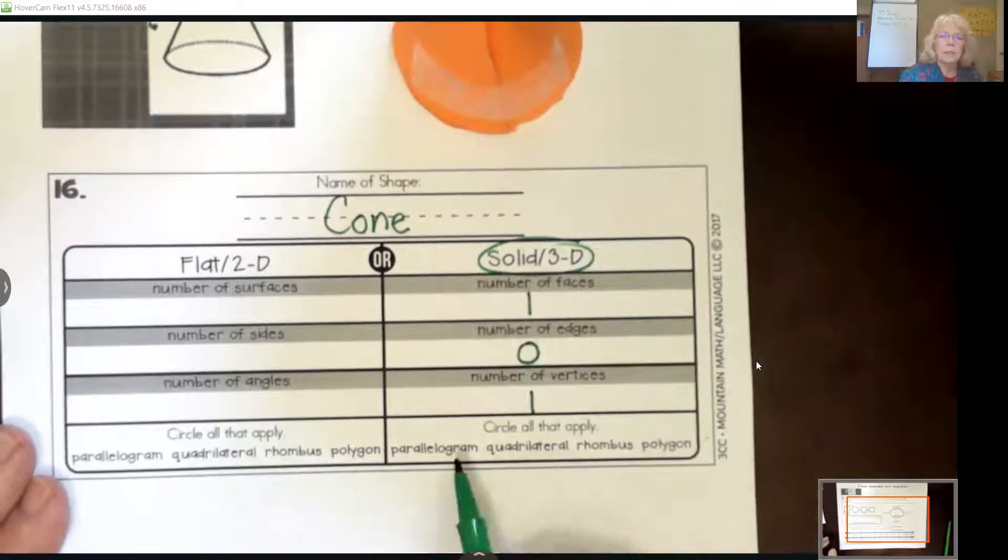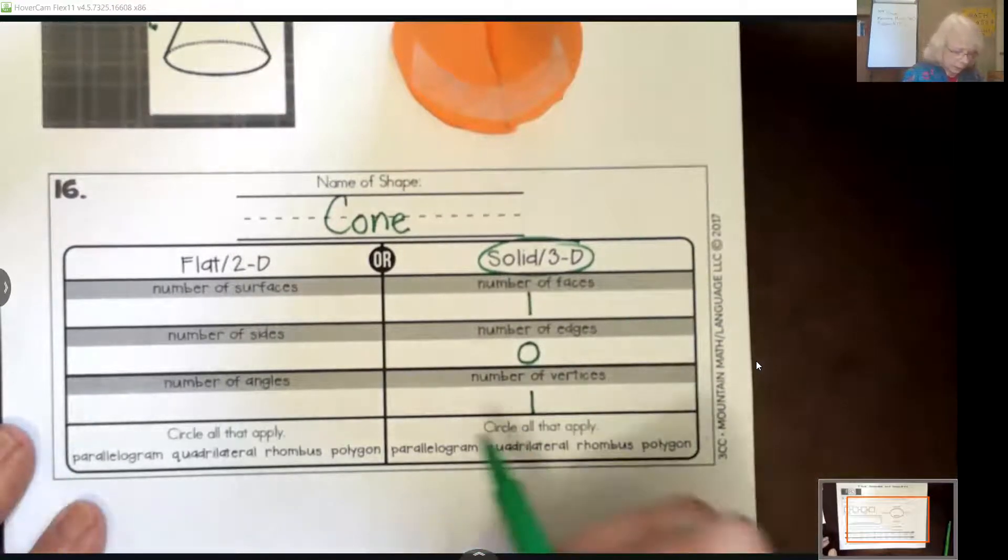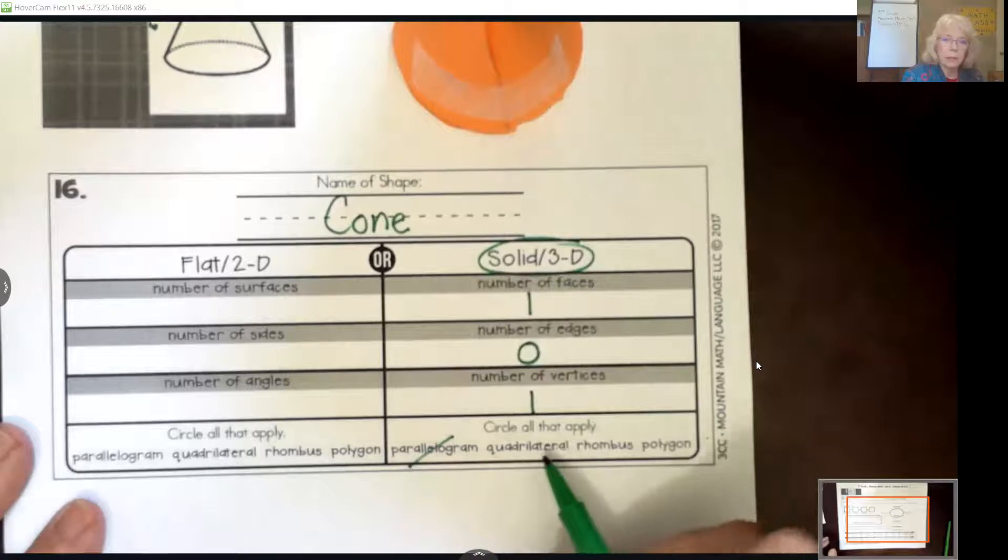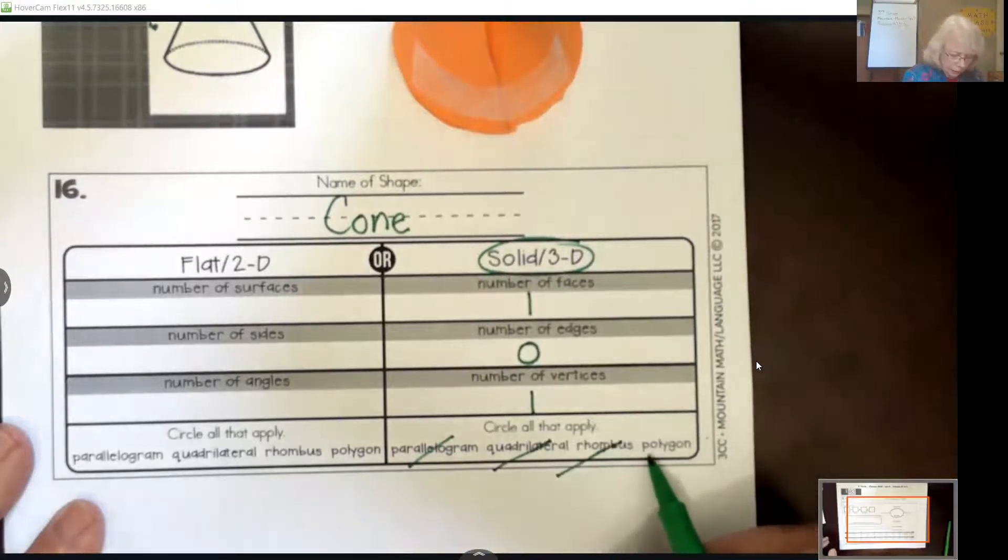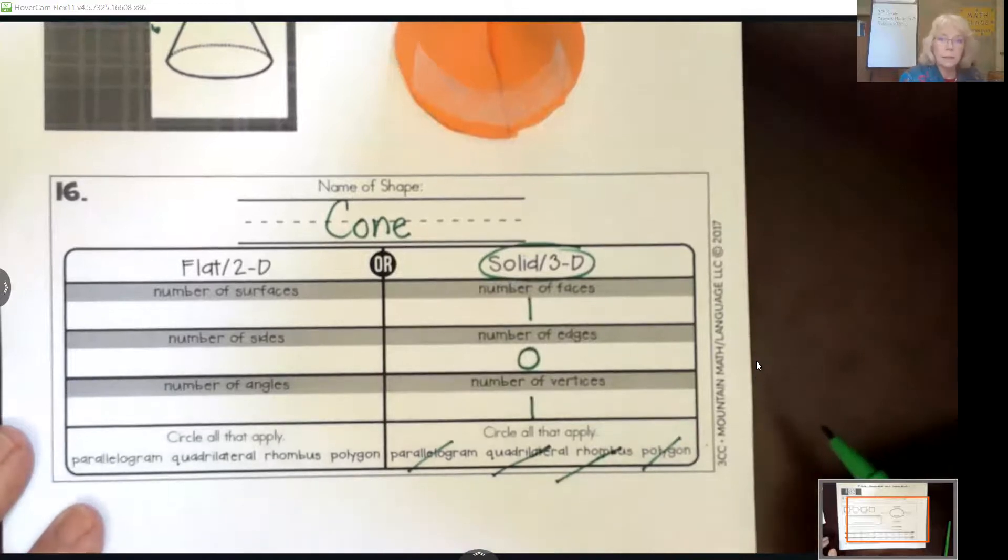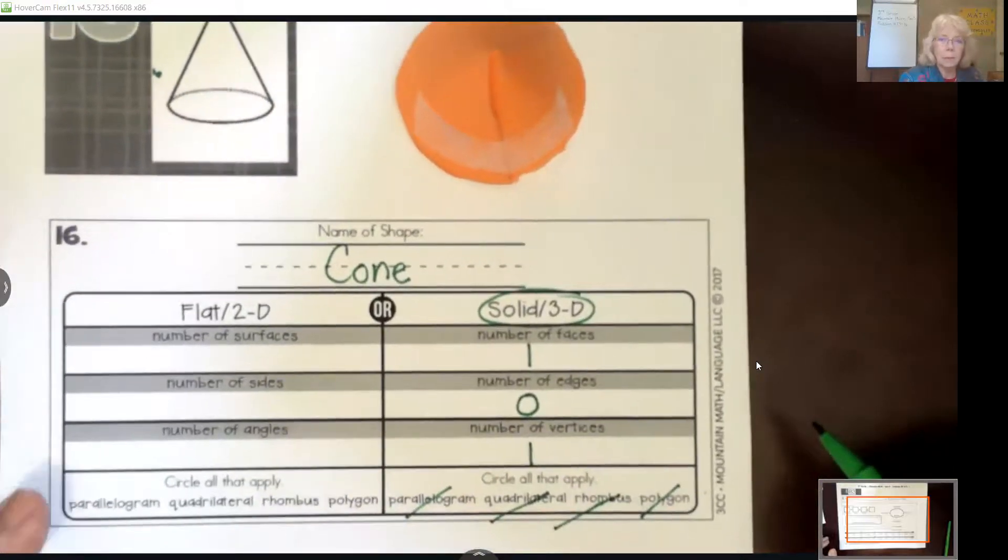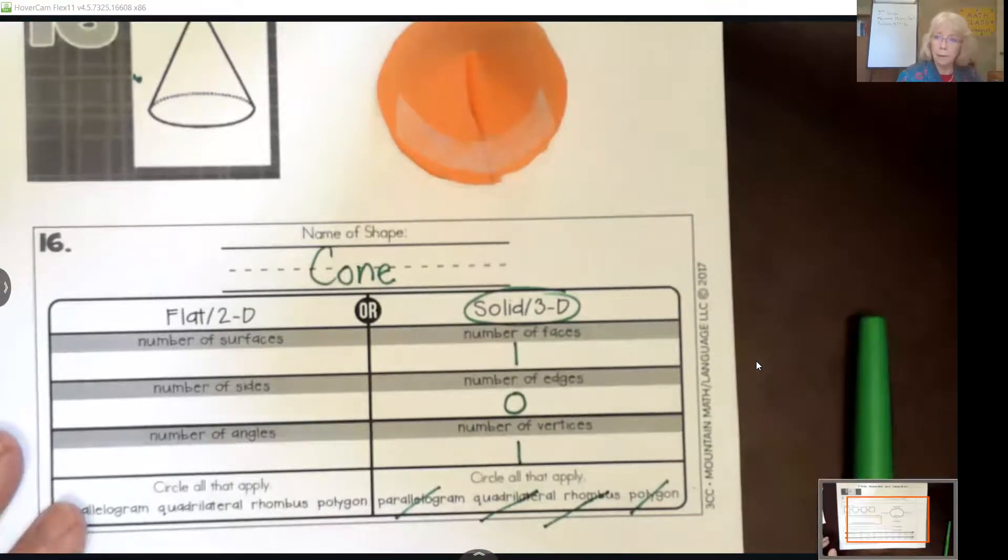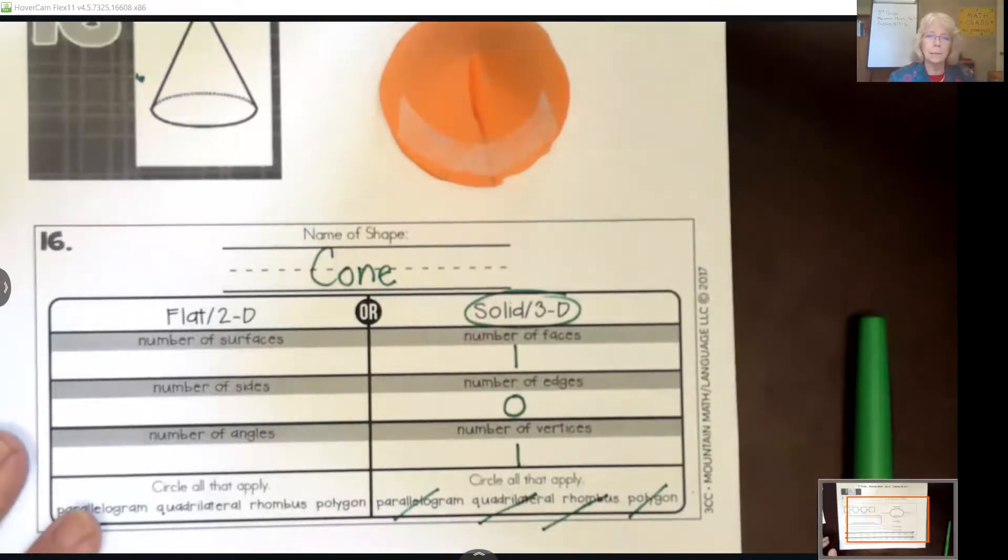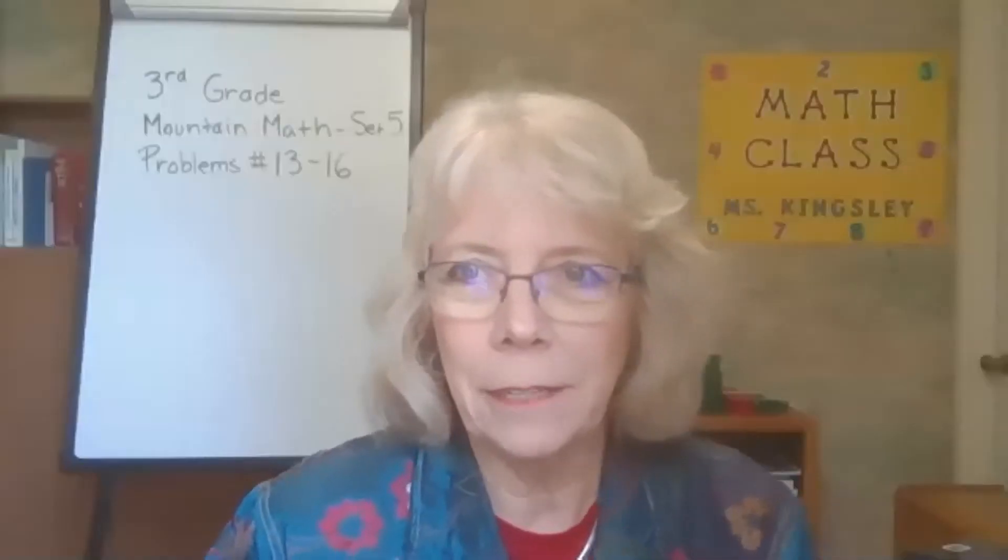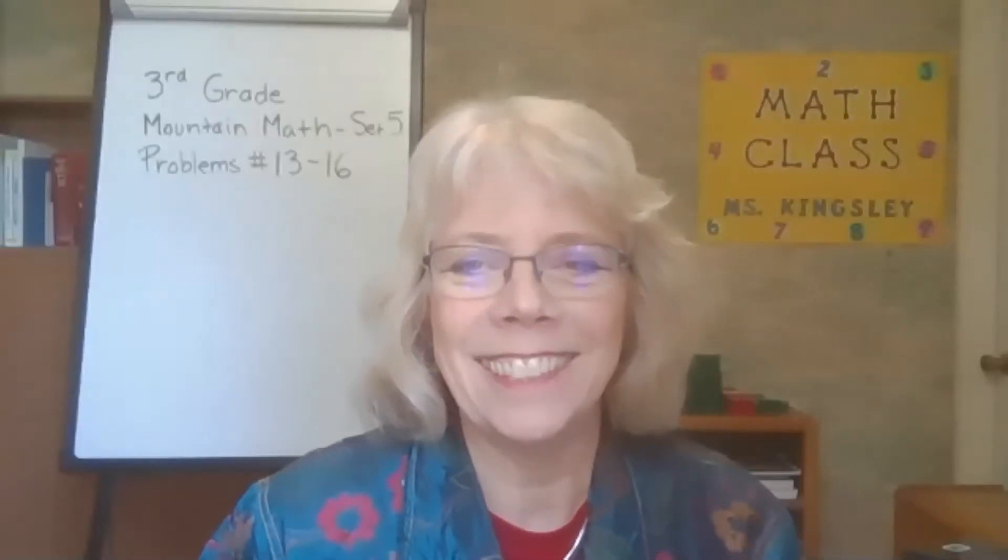Lastly, if you can read it, it says circle all that apply. Is it a parallelogram? Nope. Is it a quadrilateral? Nope. Is it a rhombus? Nope. Is it a polygon? Nope. So we are in good shape for knowing more about a cone. So hopefully you just got smarter. So that is the end of our video for Mountain Math for today. See you next time.